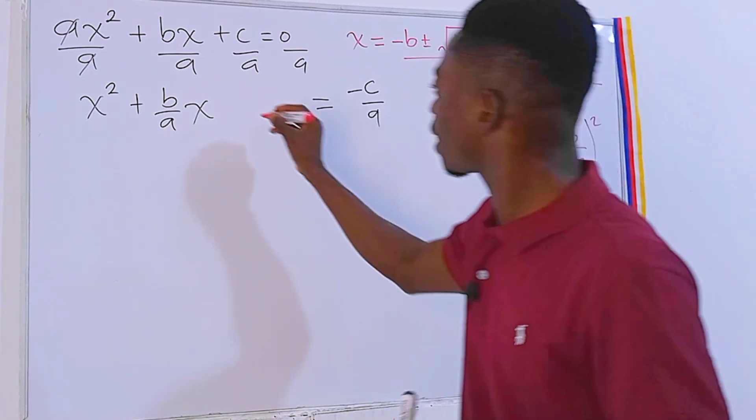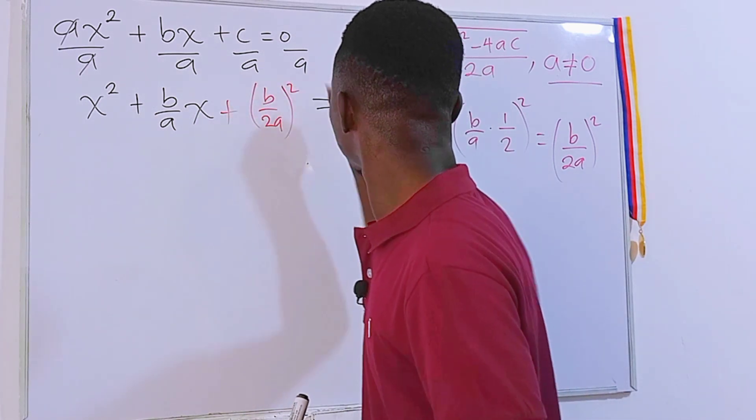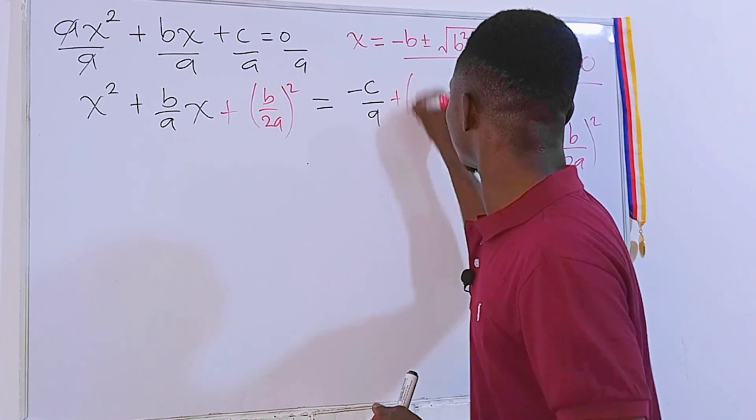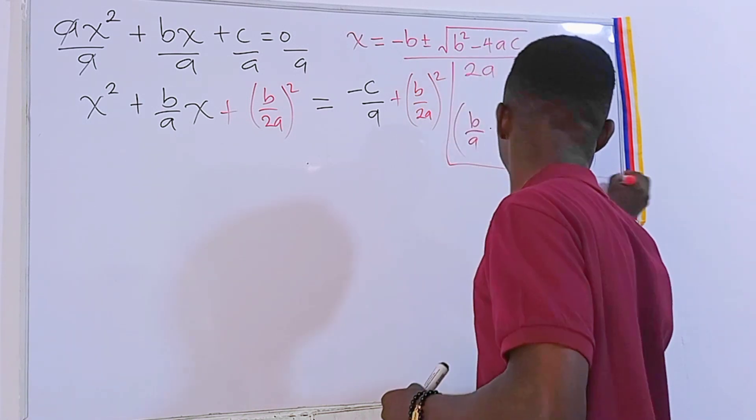Then I'll add this resource to each side of the equation: b over 2a squared. Then I'll add the same thing to this side: b over 2a squared, just like that.